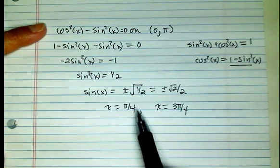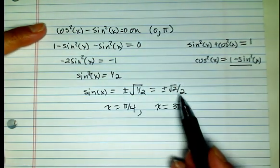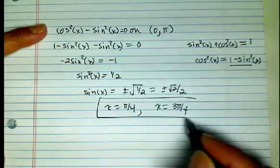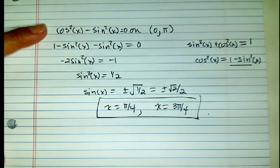We won't be able to find an x value in this particular interval that gives us the negative square root of 2 over 2. So these are our solutions. Is that what you got?